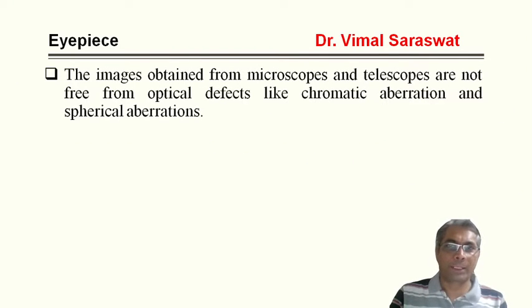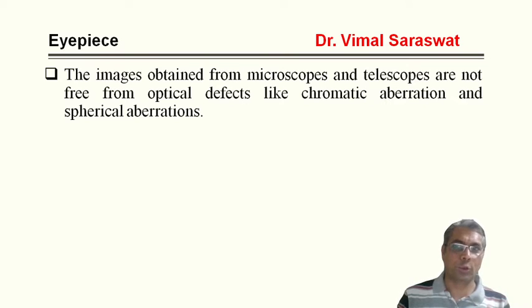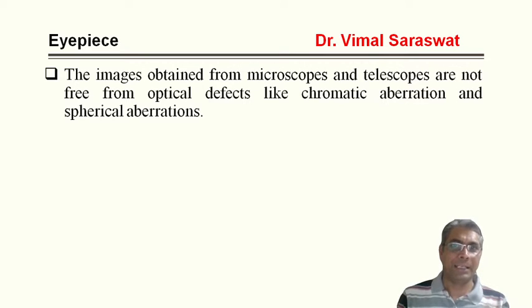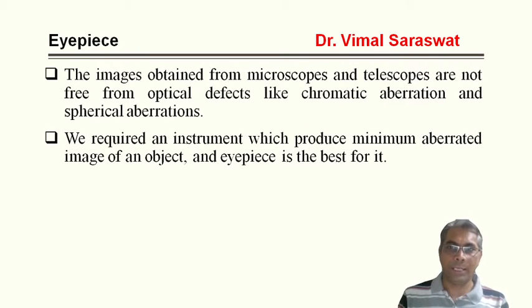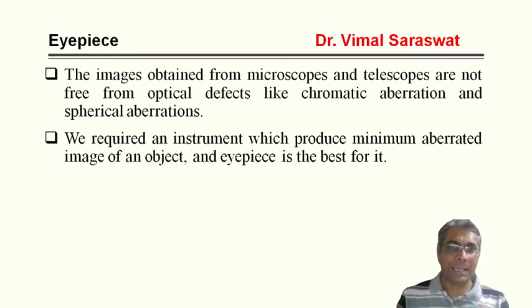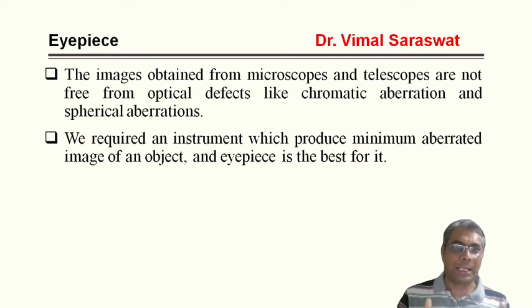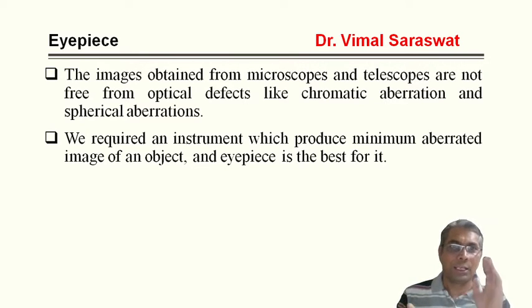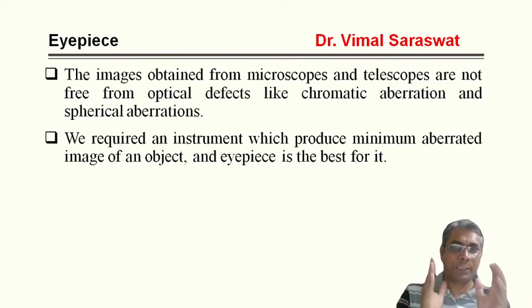Before moving to Ramsden eyepiece, what is an eyepiece? The images obtained from microscope and telescope are not free from optical defects like chromatic aberration and spherical aberration. We require an instrument which produces a minimum aberrated image of an object, and eyepiece is the best for it.